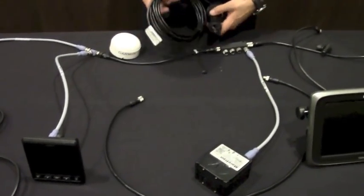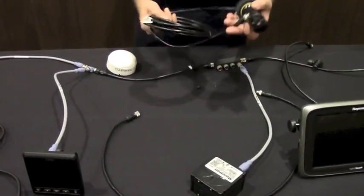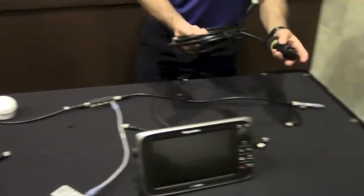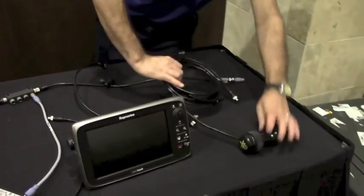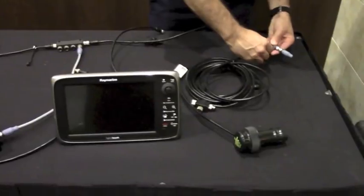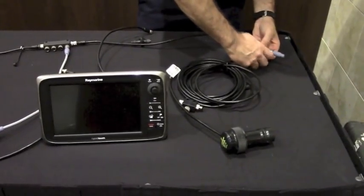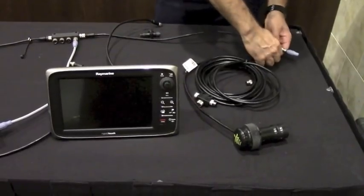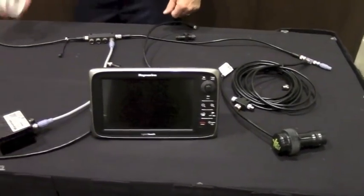So we have a display connected. We have another display. We have a compass connected. Another common connection is a NMEA 2000 transducer for depth, speed, and temperature. So I'll connect that in to the network. And again, it's a twist all the way up.